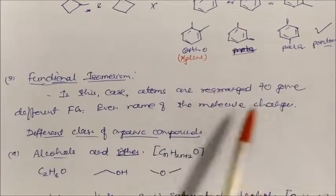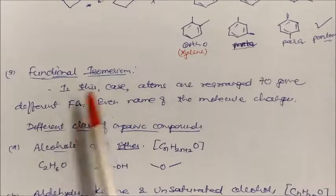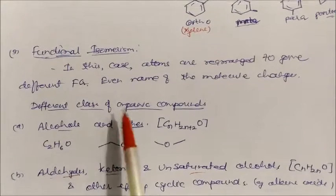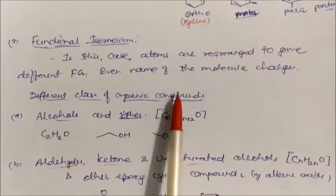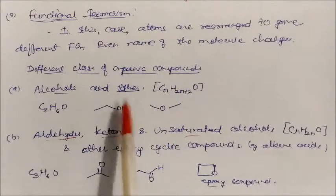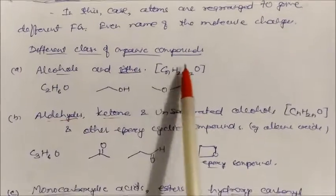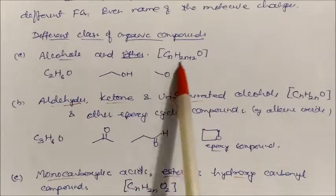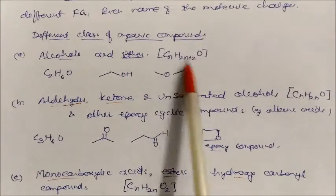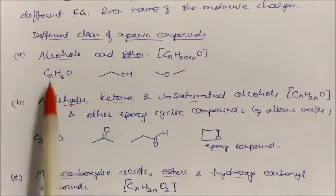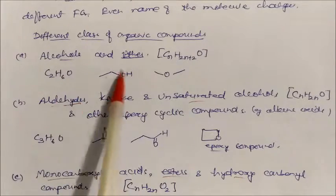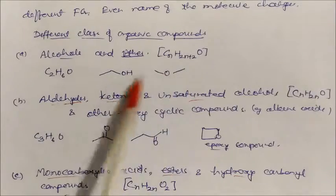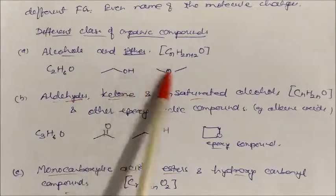Next is functional isomerism. In this case, atoms are rearranged to give different functional groups — these isomers have different types of functional groups and even the name of the molecule changes. The first class exhibiting functional isomerism is alcohols and ethers, with general formula CnH(2n+2)O. For example, C2H6O gives ethanol (alcohol) and dimethyl ether — same molecular formula but different functional groups, making them functional isomers.